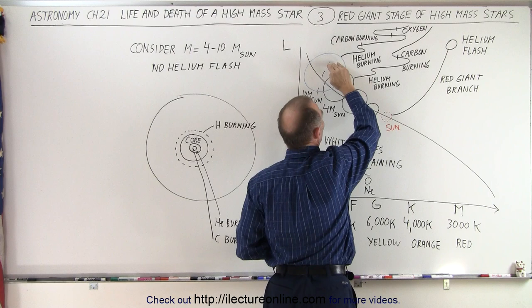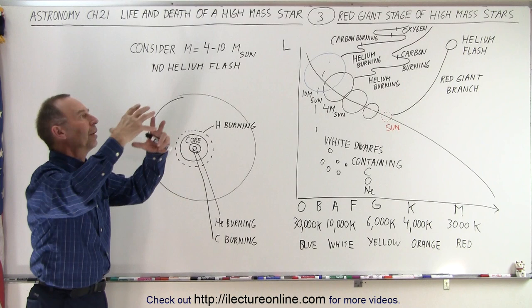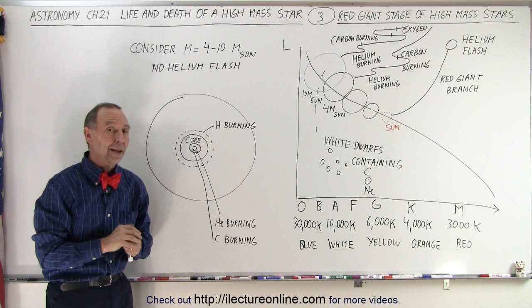and at the 10 solar mass stars, even oxygen will begin to burn, as the star moves up, and higher up, onto the main sequence, I mean, beyond the main sequence.